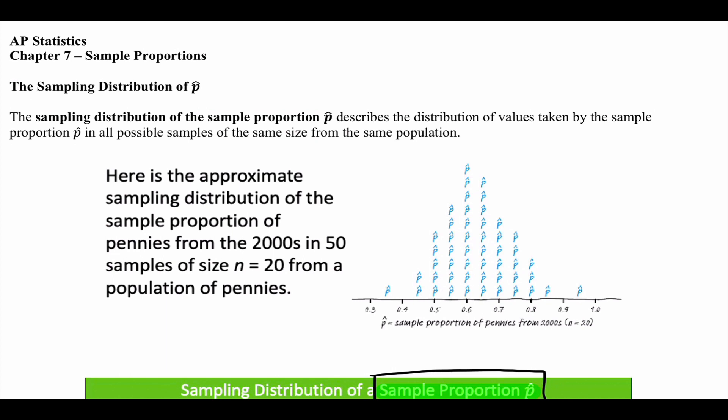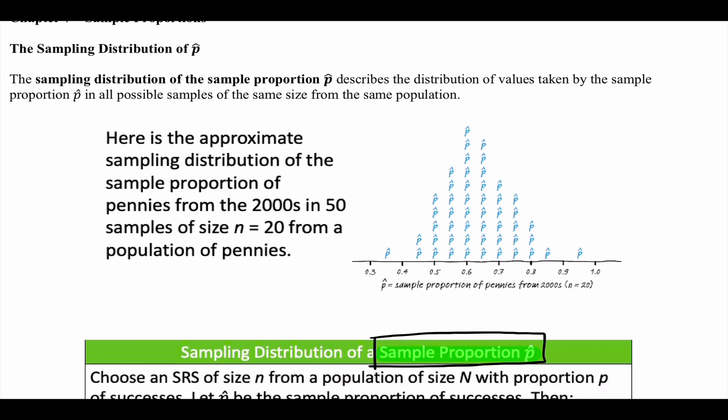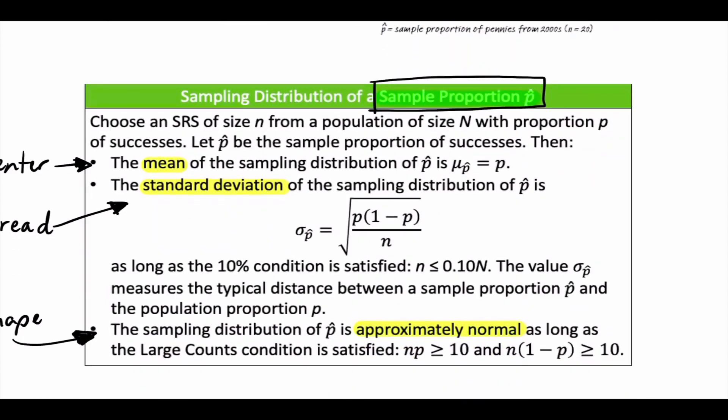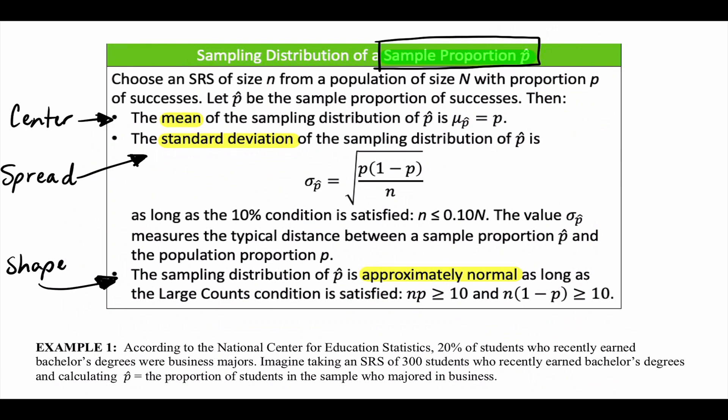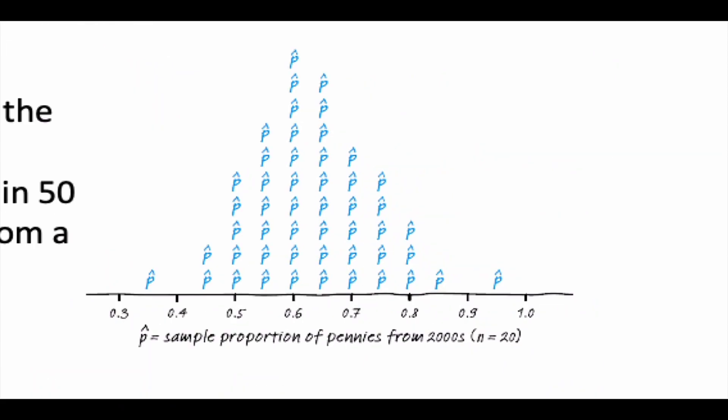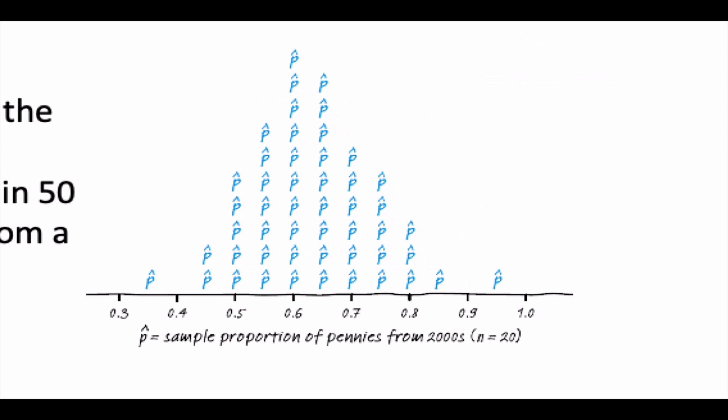So instead of X's, they use P-hats — it's the same thing. When we talk about sampling distributions, there are three things we've got to address: center, spread, and shape. How do we know where the center is going to be? How do we know what the shape is? And how do we know what the spread is? That's what this next part is for.